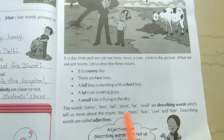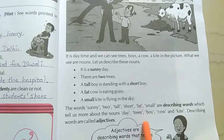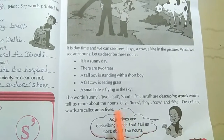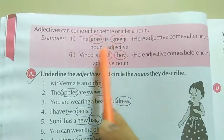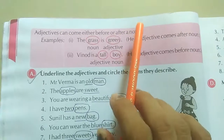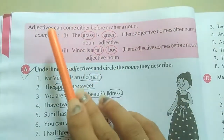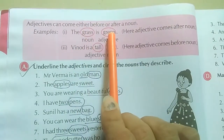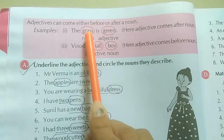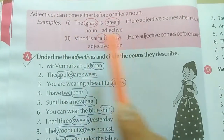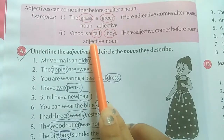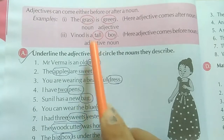Adjective, noun के आगे भी आ सकता है और पीछे भी आ सकता है। For example, 'The grass is green' — here 'grass' is the noun and 'green' is the adjective, which comes after the noun. In 'This is a tall boy', 'boy' is the noun and 'tall' is the adjective, which comes before the noun. Here adjectives come before the noun.